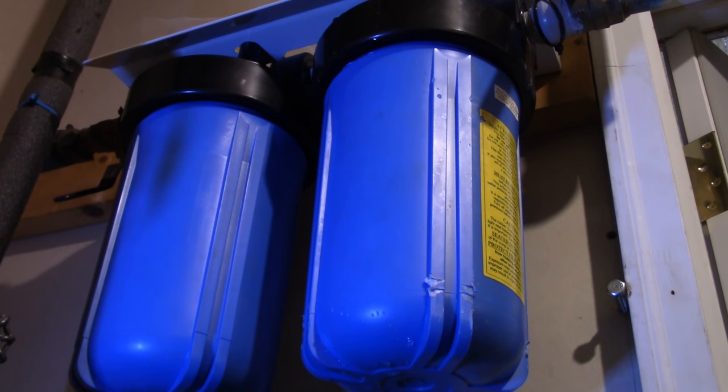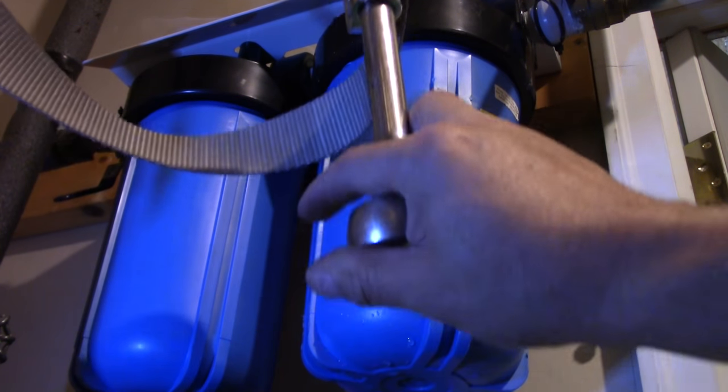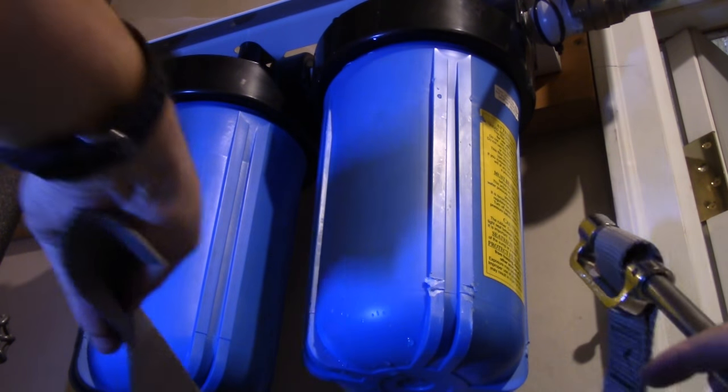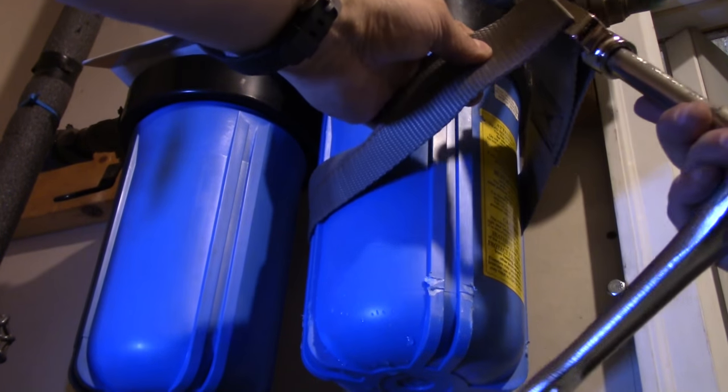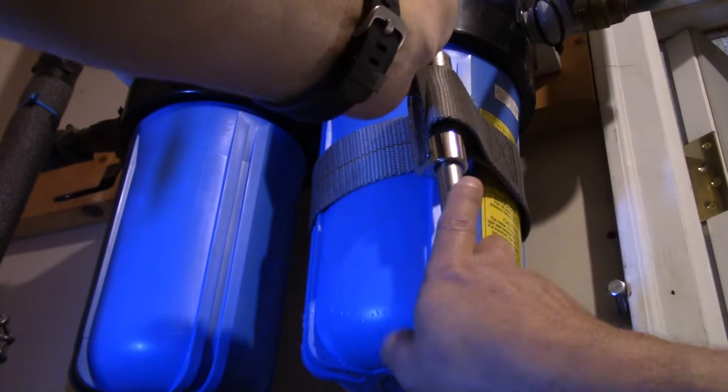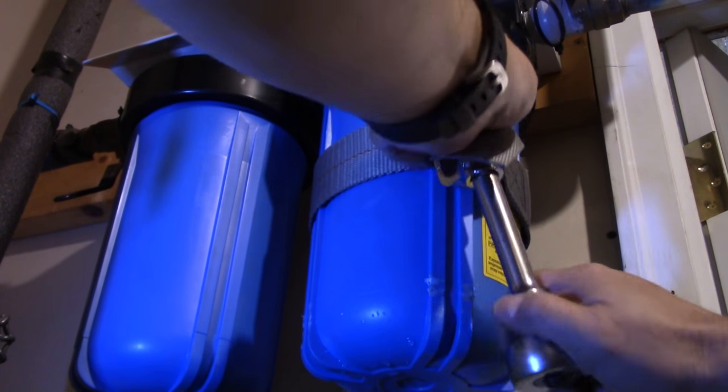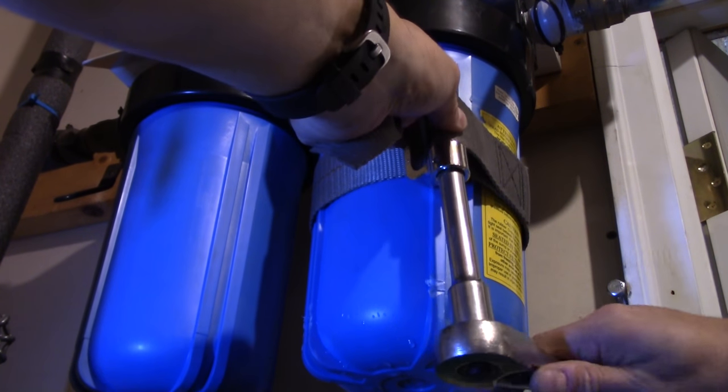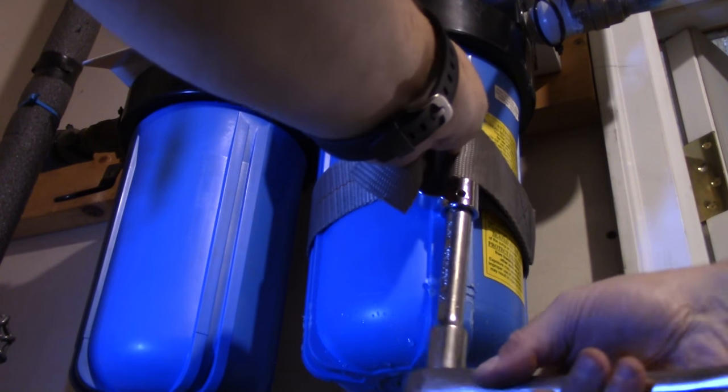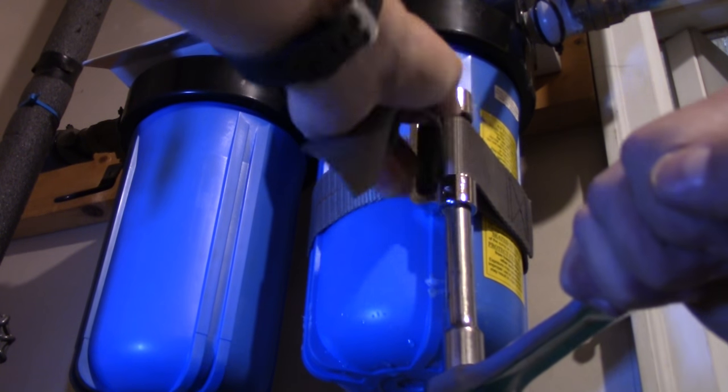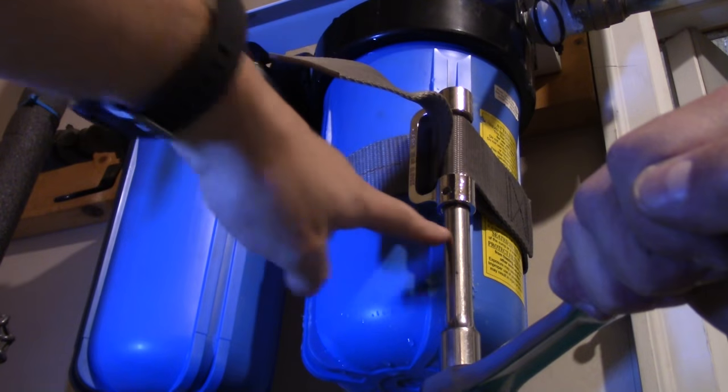All right, so I'm going to use a fairly short extension, half-inch ratchet. You could use a breaker bar. An added advantage of this is that it can catch on these ridges.